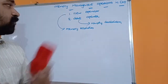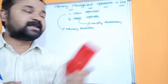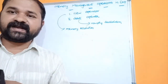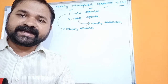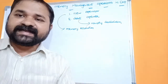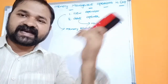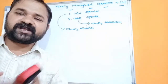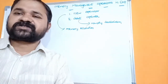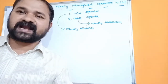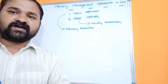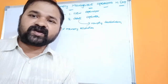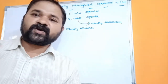Now let us see about the delete operator. Delete operator is called as memory deallocation operator. Delete operator is useful in order to release the memory which was allocated for a variable — it may be a pointer variable, array, structure, or a class. With the help of delete operator, we can release the memory for the corresponding variable.